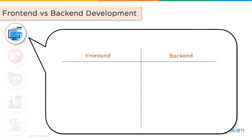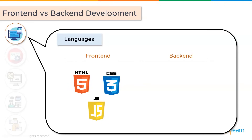Let's begin with languages. Front end development typically includes coding using languages like HTML, CSS and JavaScript. HTML is a markup language that is a standardized system for tagging text files to achieve font, color, graphics and hyperlinks. CSS is used to format the layout of web pages, and JavaScript is used to create interactive elements on the web page.